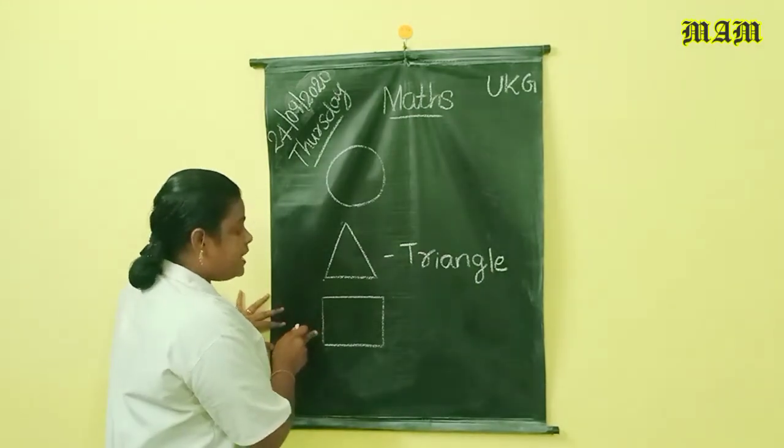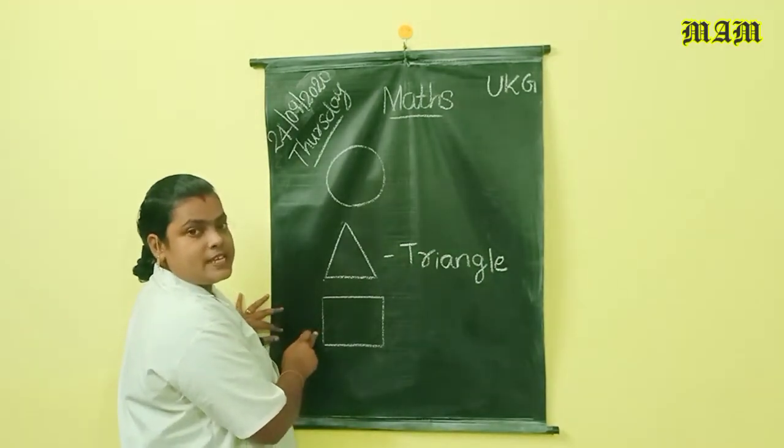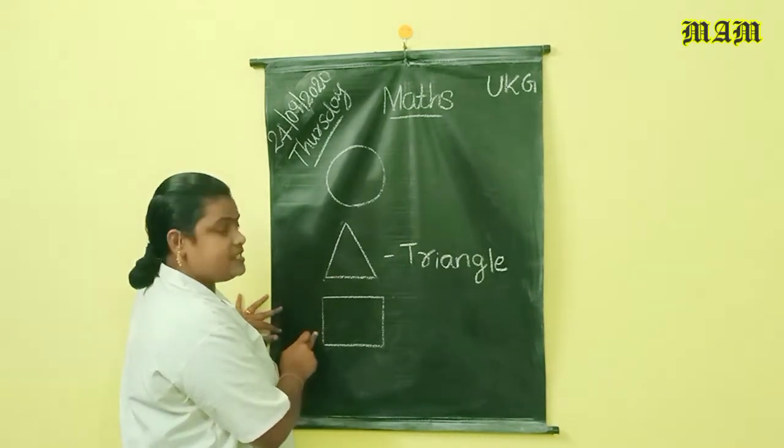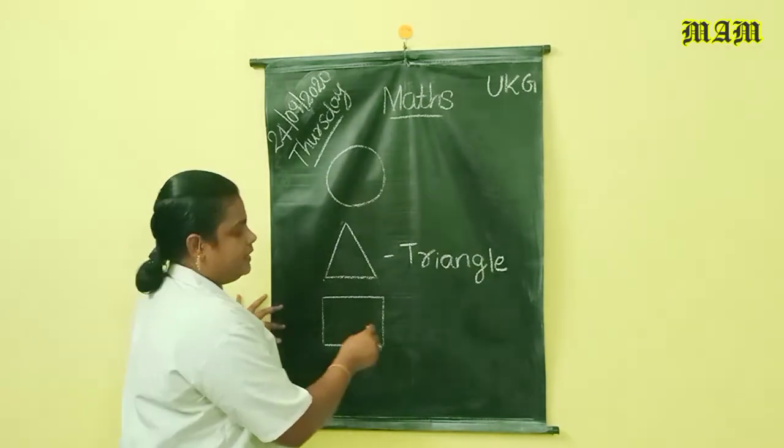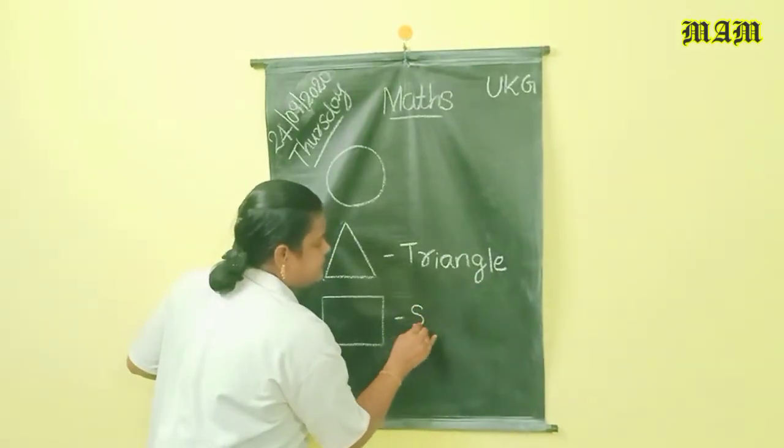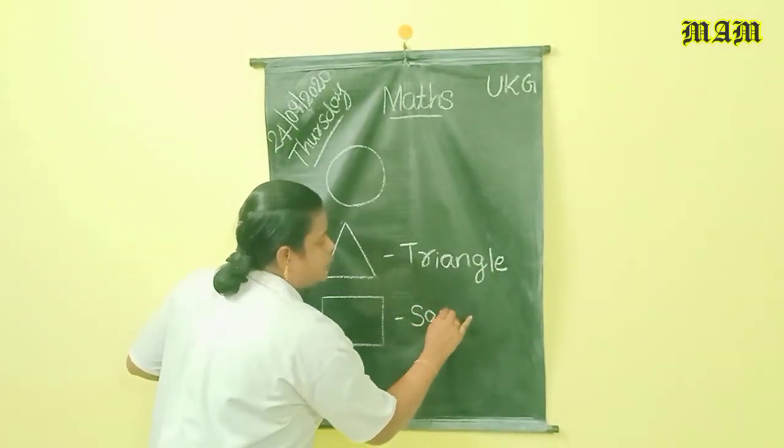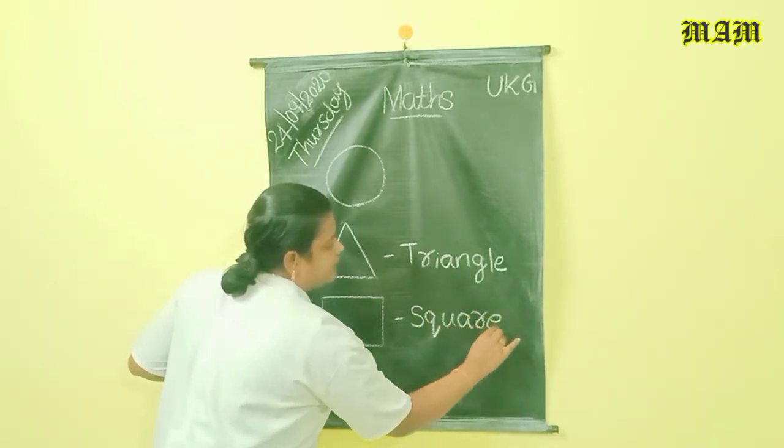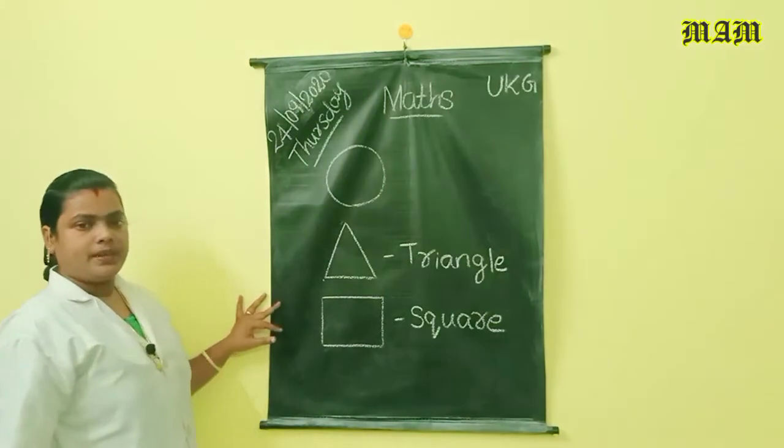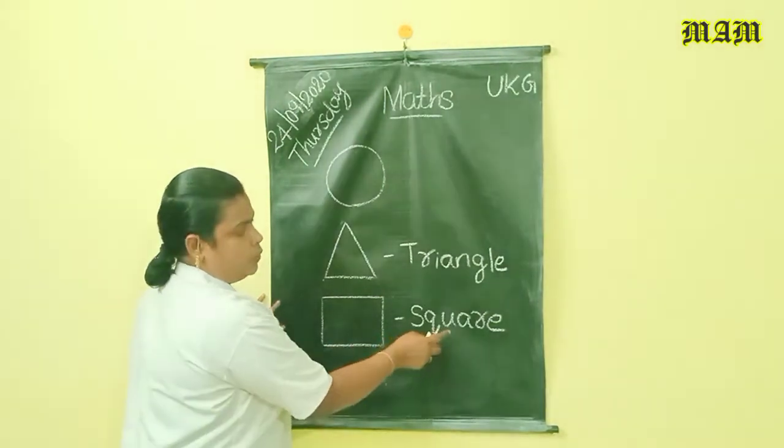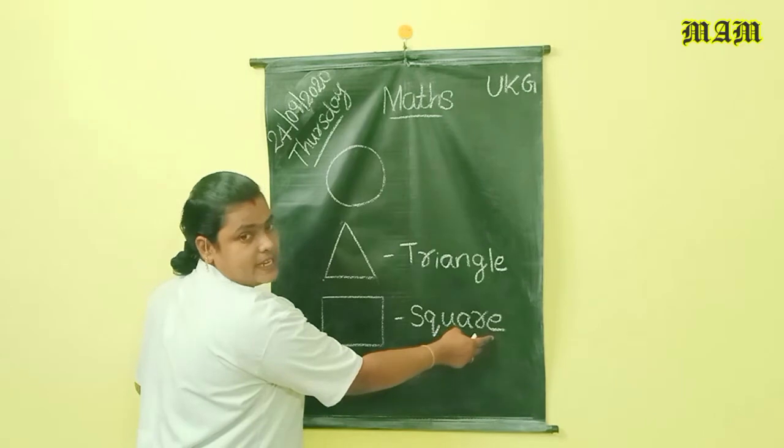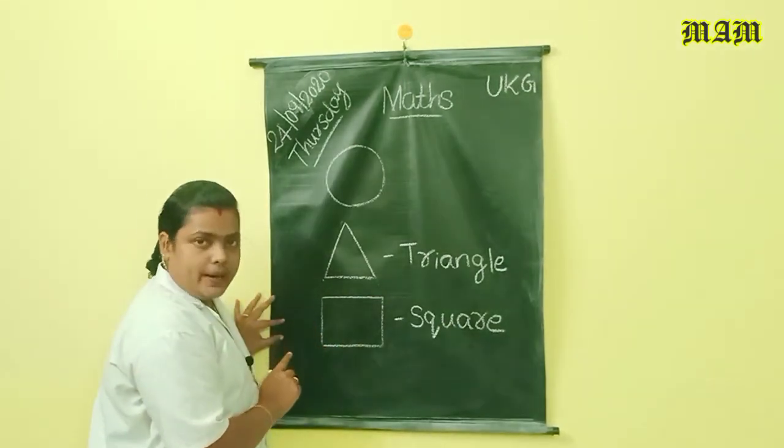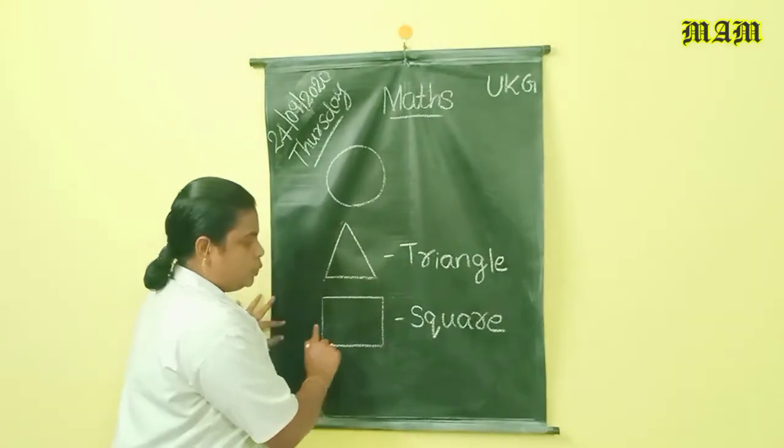Next, which shape is this? Square. This is square. The spelling of square: S-Q-U-A-R-E. Square. Square means chadudam.